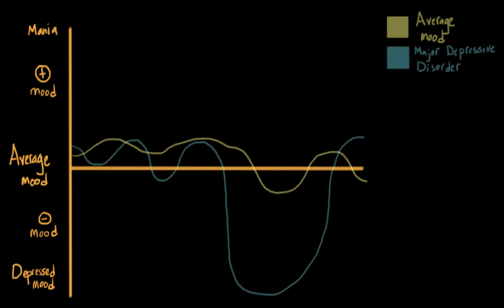Individuals with major depressive disorder might cycle normally through moods a lot of the time, but they will also have periods of intense depression. These are often unrelated to what is going on around them. These dips represent serious depressive states.